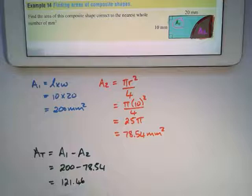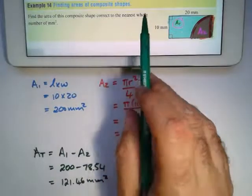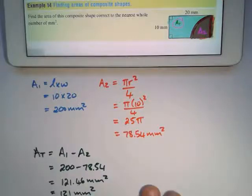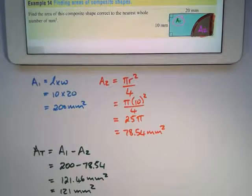And this will be in millimeters squared. Now the question says to the nearest whole number, so this is the whole number. Looking at four, four is less than five, so it will be just 121 millimeters squared.